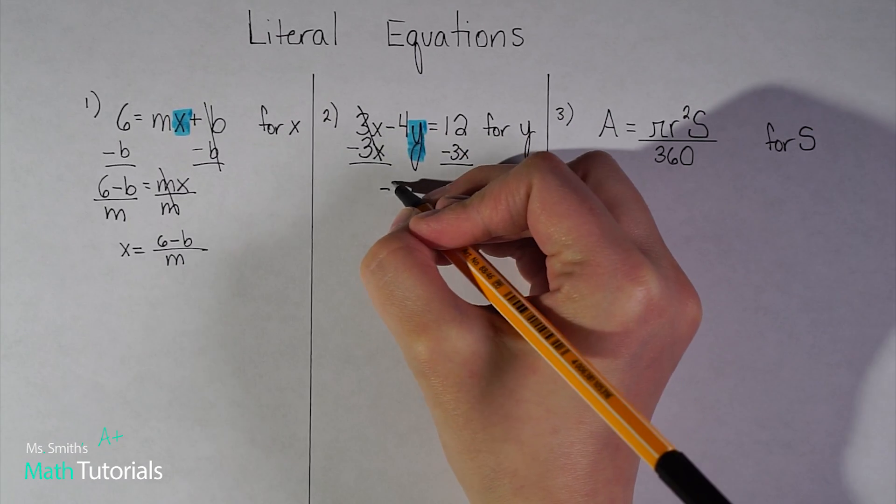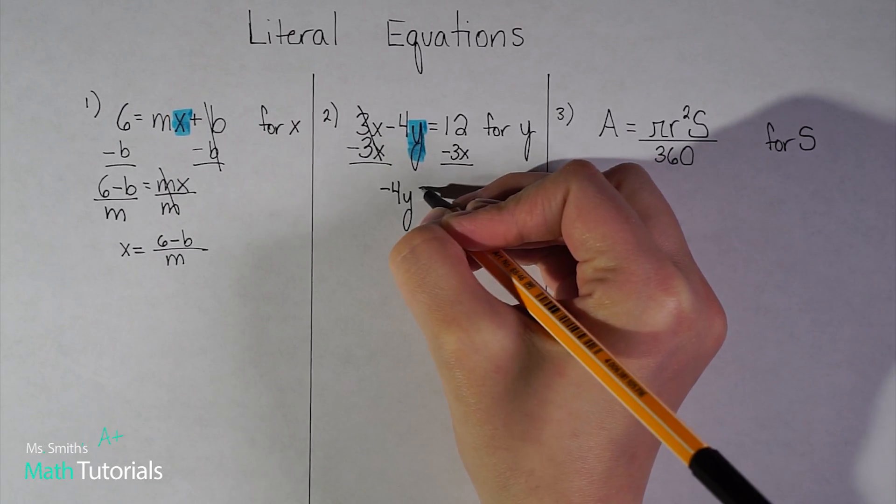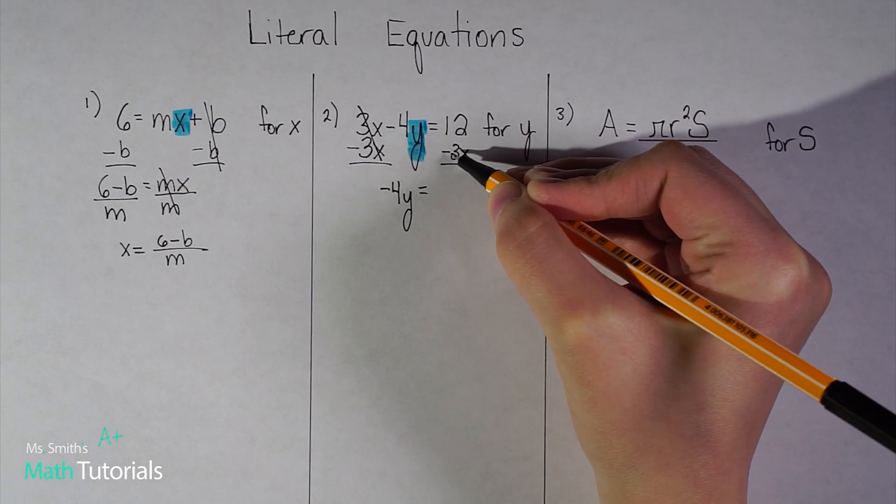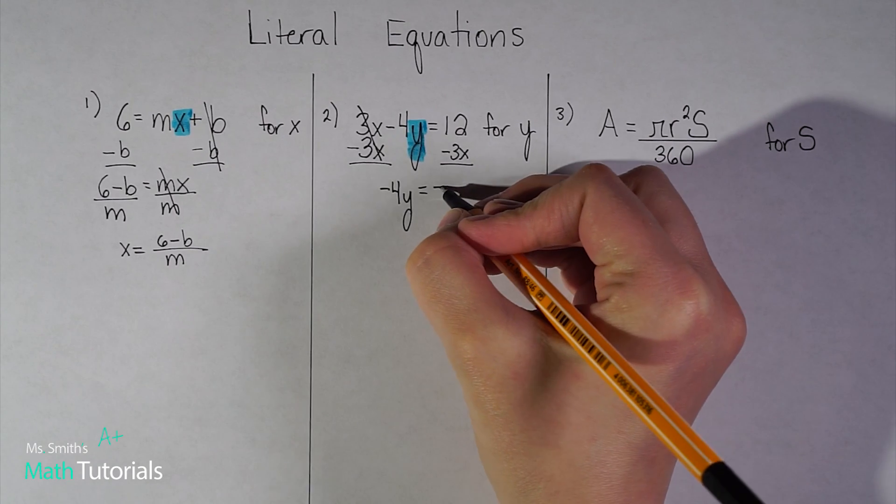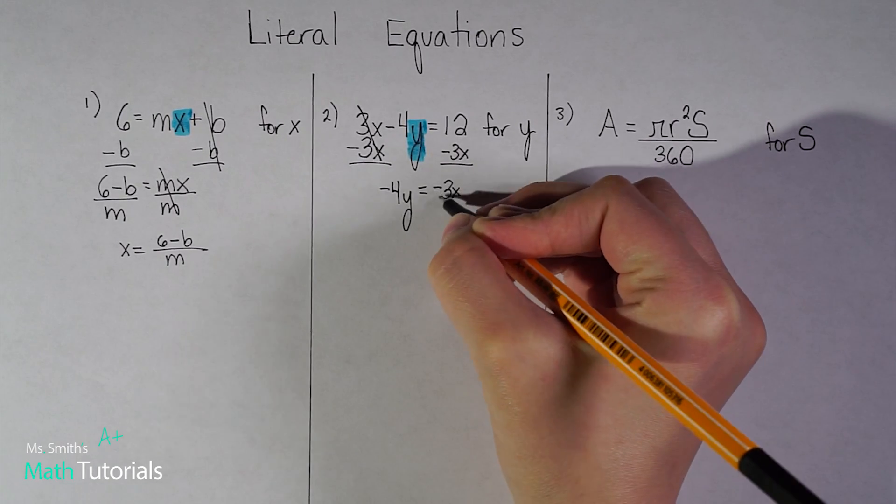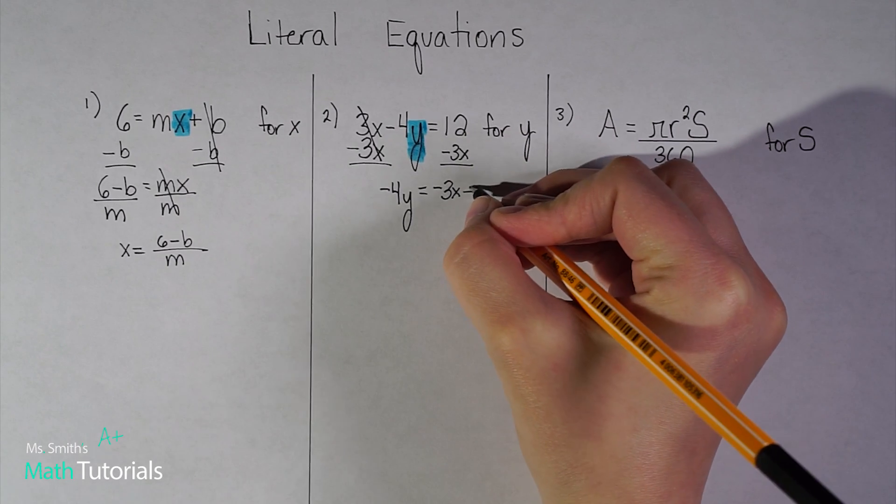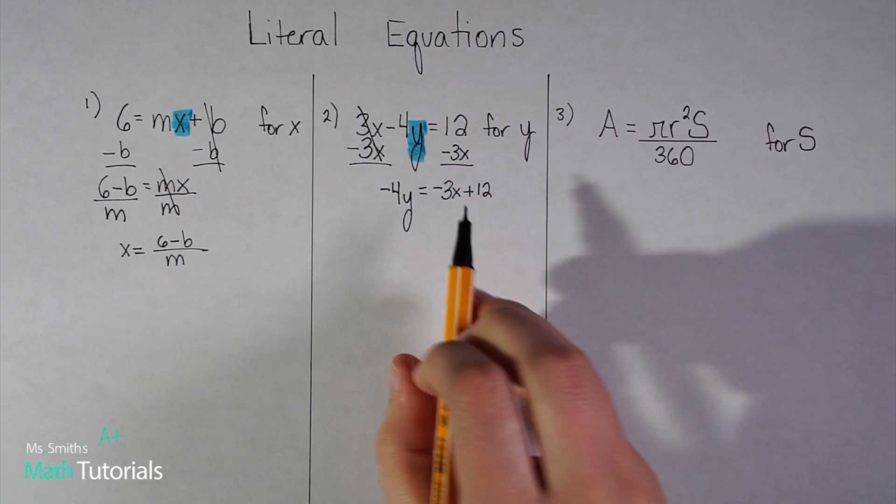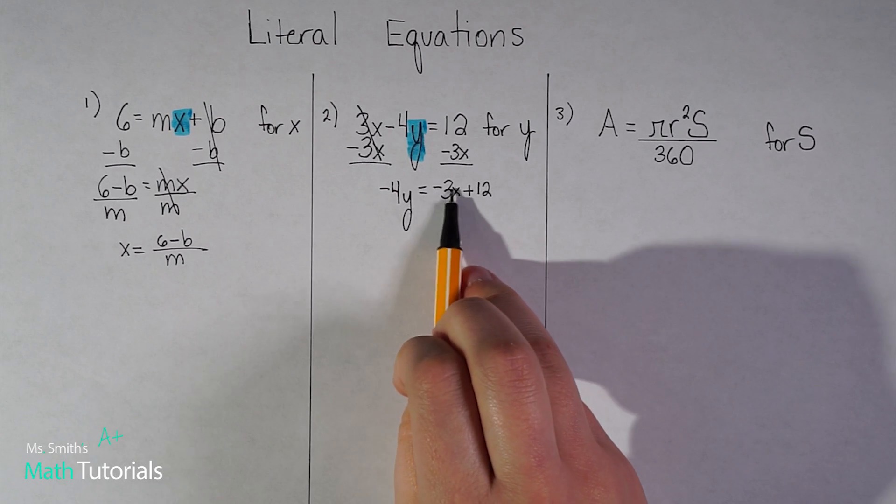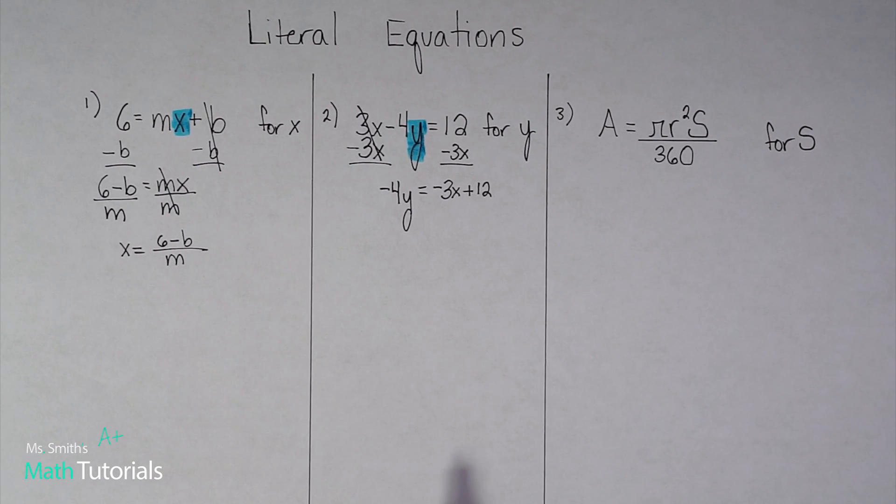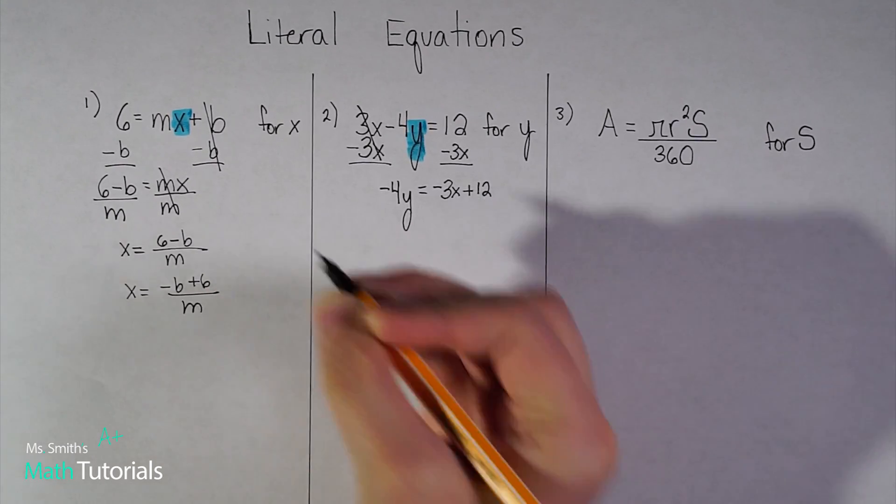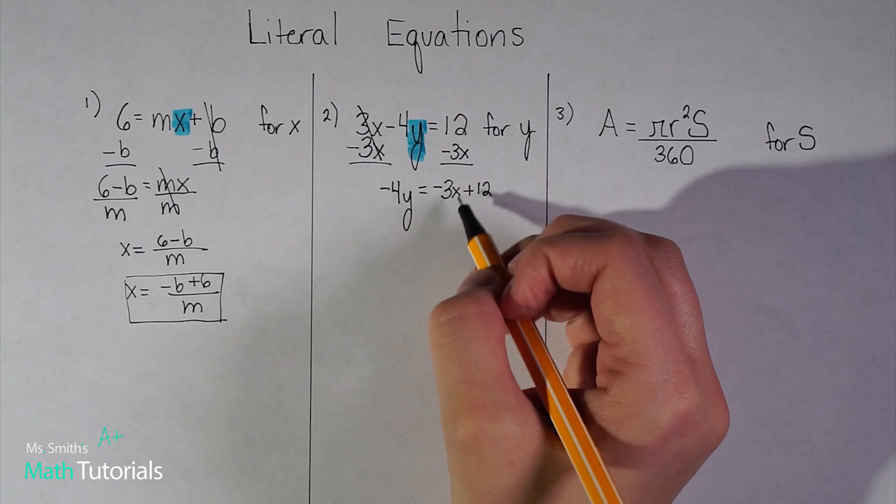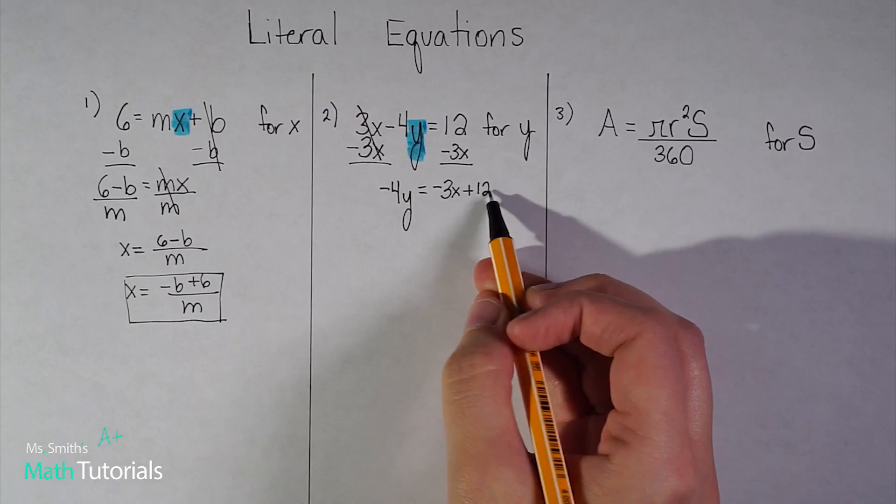So let me bring down what I have left. I've got negative 4y equals... Now I can't combine 12 minus 3x. Those are not like terms. I'm going to just rewrite it. And I'm going to be careful to rewrite it in standard form. So I'm going to put the negative 3x first, then the positive 12. Remember in one of my first videos, we talked about standard form and having your variables first and your constant second. And so looking back at here, I should probably go ahead and switch that. So I could rewrite this as negative b plus 6 over m.